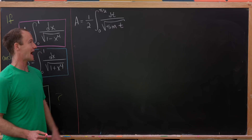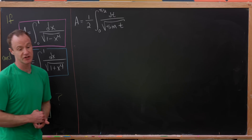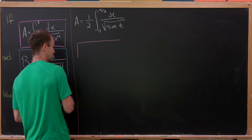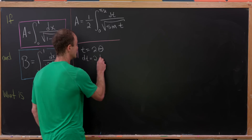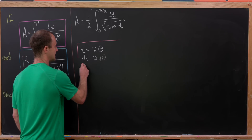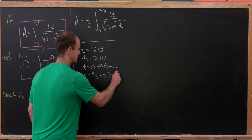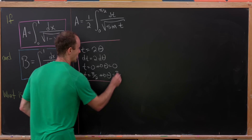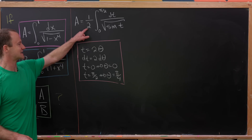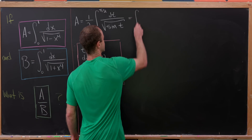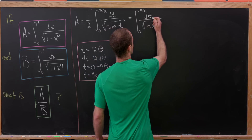So far we've shown that A equals one half times the integral from 0 to pi over 2 of dt over the square root of sine t. Now we continue with the substitution t equals 2 theta, so dt equals 2 d theta. When t equals 0, theta equals 0; when t equals pi over 2, theta equals pi over 4. The factor of 2 from dt cancels the one half, leaving us with the integral from 0 to pi over 4 of d theta over the square root of sine 2 theta.